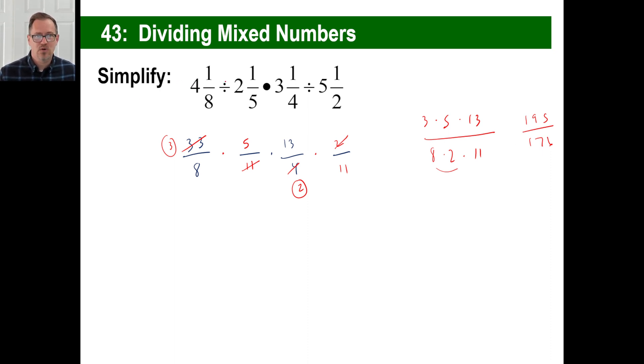Well, it's kind of weird. But let's look at this. Let's estimate. 4 divided by 2 is about 2, right? 2 times 3 is about 6. 6 divided by 5 1/2 is about 1, right? Is this about 1? That's a reasonable answer, right? Because 195 divided by 176 is about 1. So that's a reasonable answer.